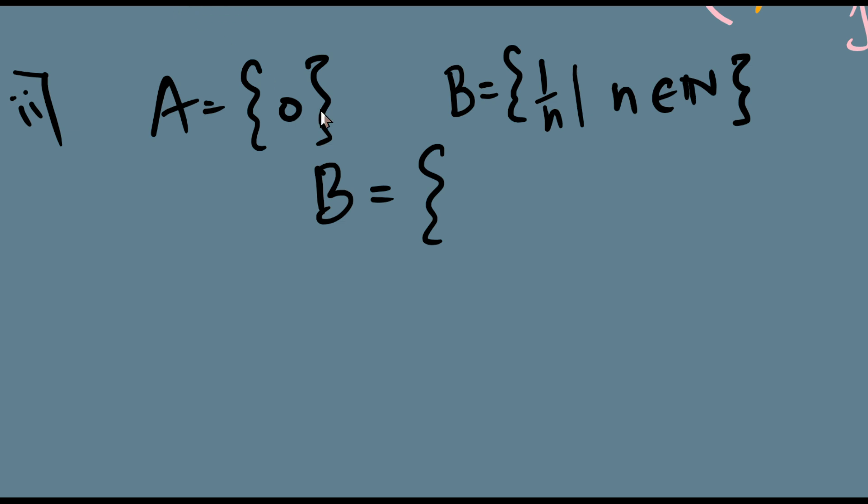Set B in roster form would look something like this: 1/1 for the first natural number one, then I'll have 1/2, then 1/3, 1/4, 1/5, 1/6, and so on. And immediately we say that this is an infinite set.